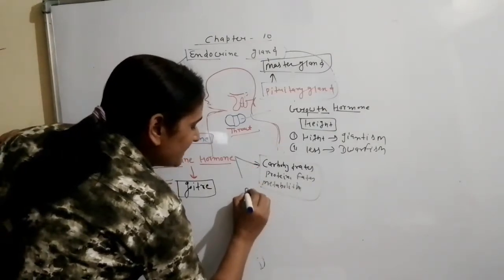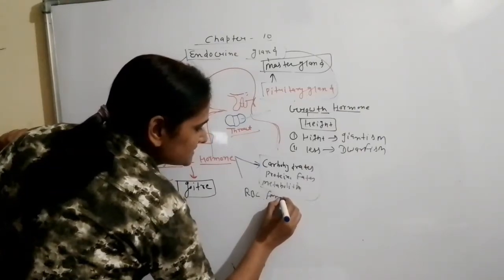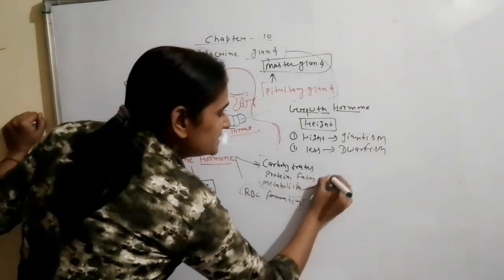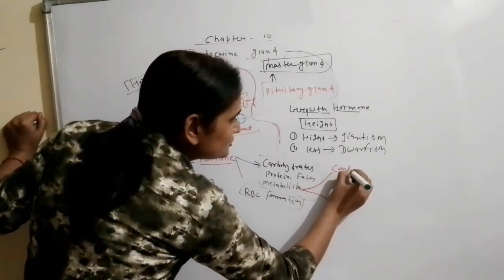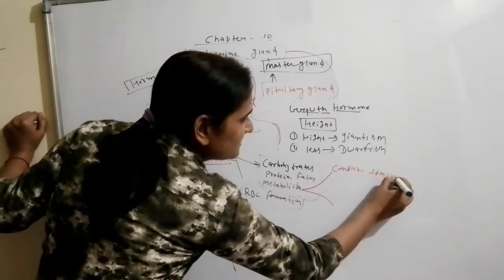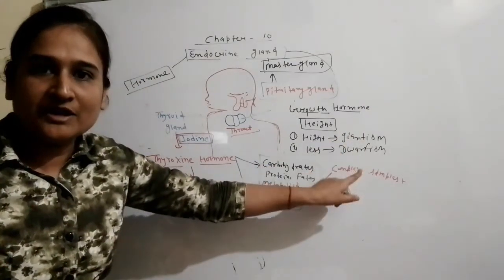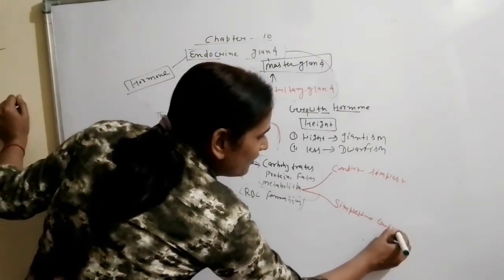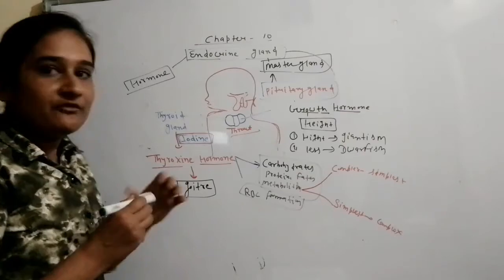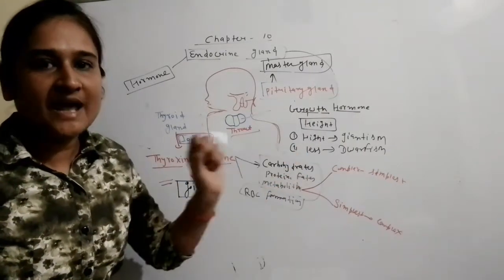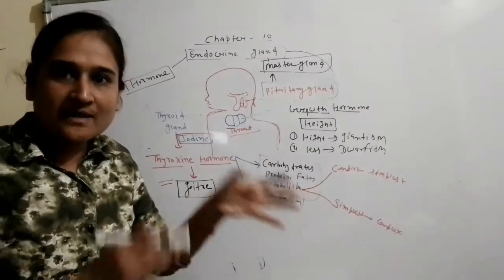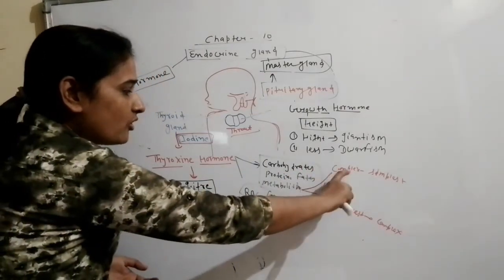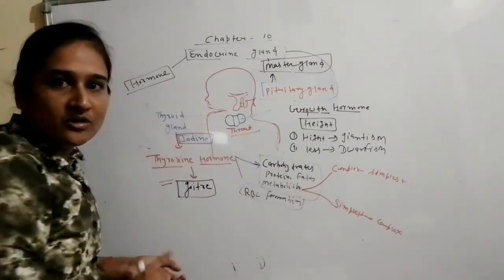Thyroxine hormone also plays a role in RBC formation in our body. Metabolism means the conversion of complex particles into the simplest particles, and simple particles into complex particles. When we take food, it is complex; after digestion, it becomes energy. Thyroxine hormone regulates this two-part metabolic process.